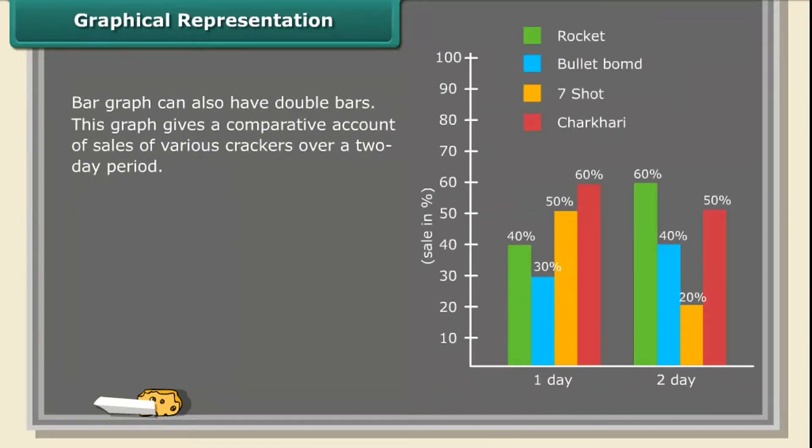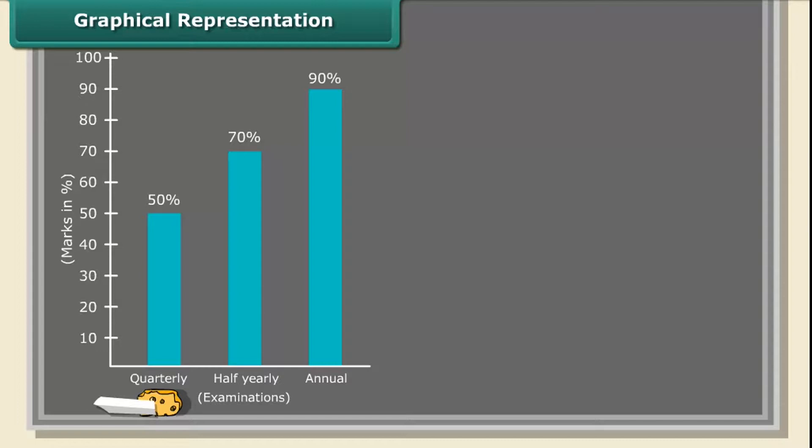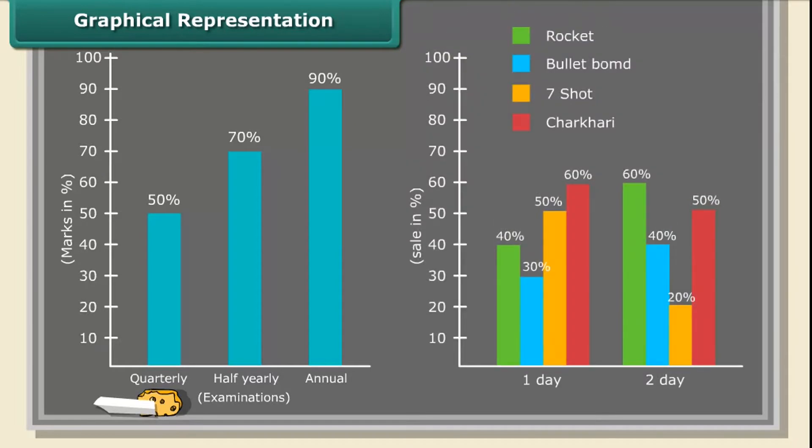Bar Graph can also have double bars. This graph gives a comparative account of sales of various crackers over a two-day period. From the above graphs, the first graph shows the comparison of three examinations of a student. The second graph shows that four variety of crackers sales in two days.